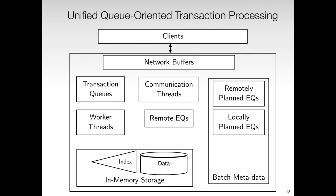Now we illustrate the second key idea in Q-Store, which is our unified approach to processing remote and local queues. We present a simplified architecture of a server node. We use dedicated communication threads to handle network messages. Communication threads are responsible for receiving transactions from clients and placing them in transaction queues. They are also responsible for exchanging remote execution queues among servers. We use worker threads to perform the two phases of planning and execution. During the planning phase, worker threads create local and remote execution queues. Remote execution queues are handed to the communication threads for delivery to remote nodes.